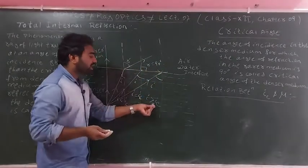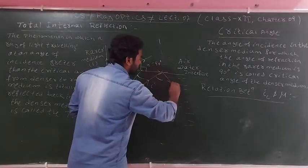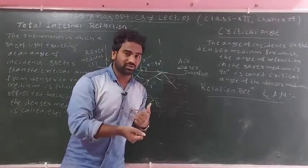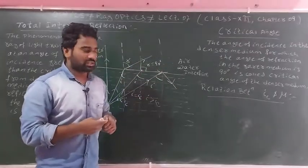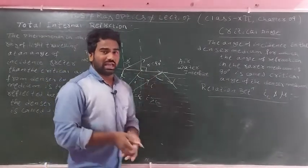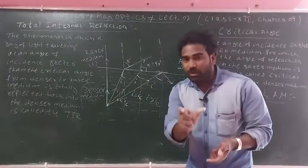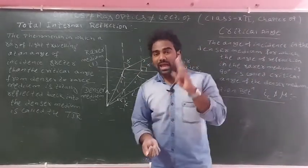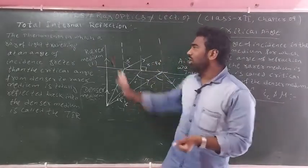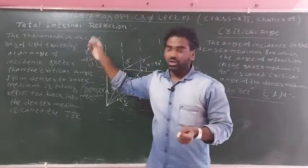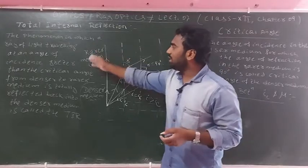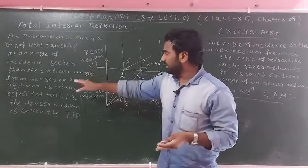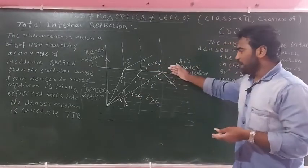When the angle of incidence exceeds the critical angle, the refracted ray disappears and the light bounces back into the same medium. This bouncing back of light into the same medium is called reflection. The phenomenon in which a ray of light traveling from denser to rarer medium at an angle of incidence greater than the critical angle is totally reflected back into the denser medium is called total internal reflection.